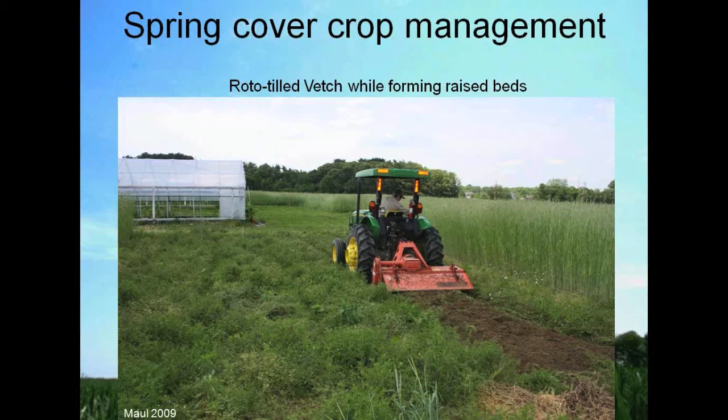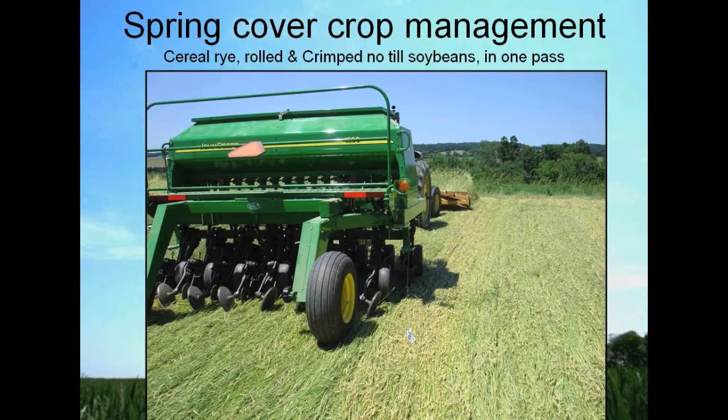In some of the research I do, we use a rototiller to turn in the cover crop while forming raised beds for vegetable research. Or in some cases, we can combine the roller crimper on the front of the tractor with a no-till drill on the back and plant soybeans into this heavy rye mulch in a single pass.